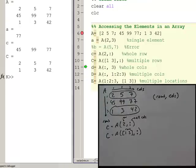So as you see here, capital C, which is an array, which is why I have it capitalized, is equal to the row 2, 5, 7, columns 1, 3, and 42.